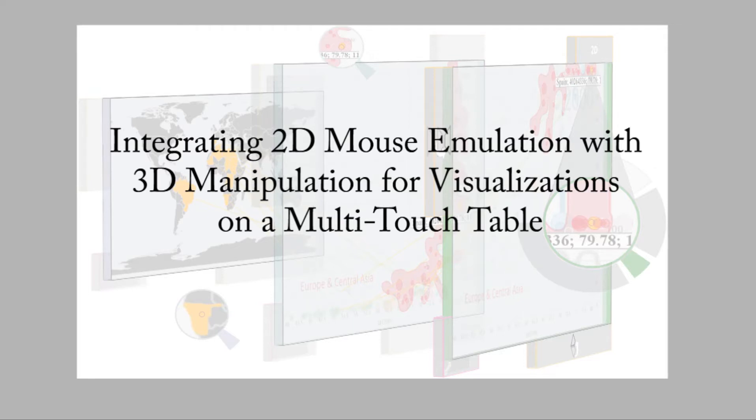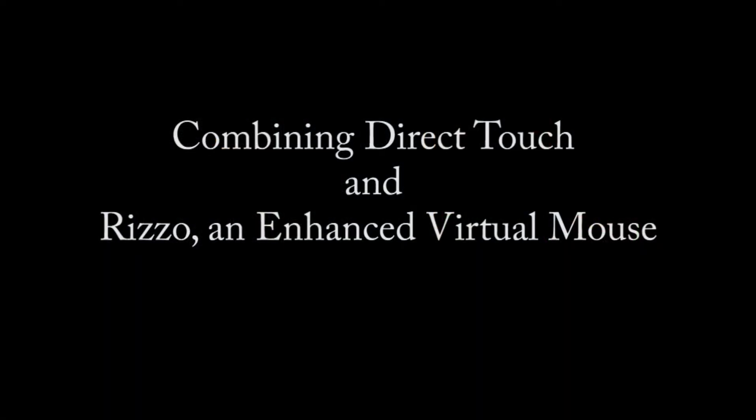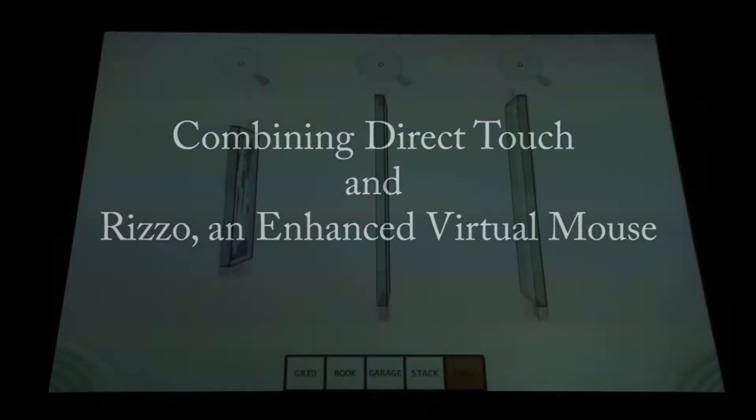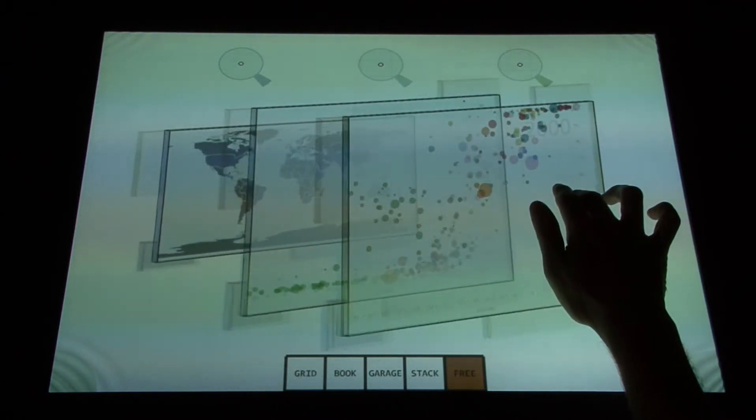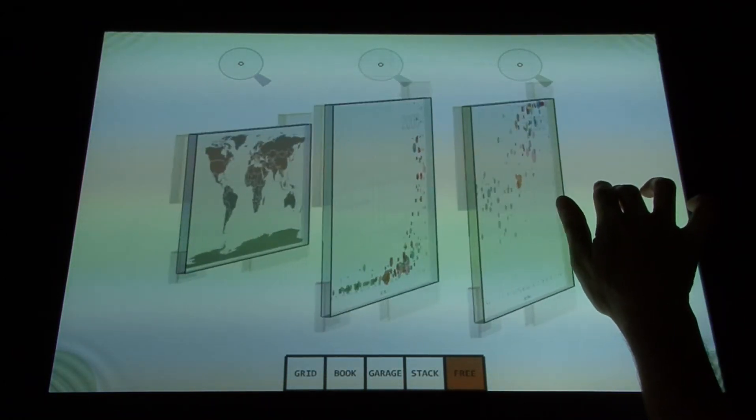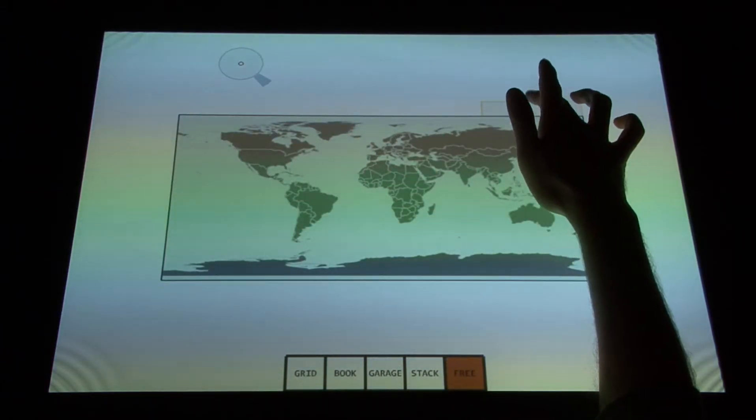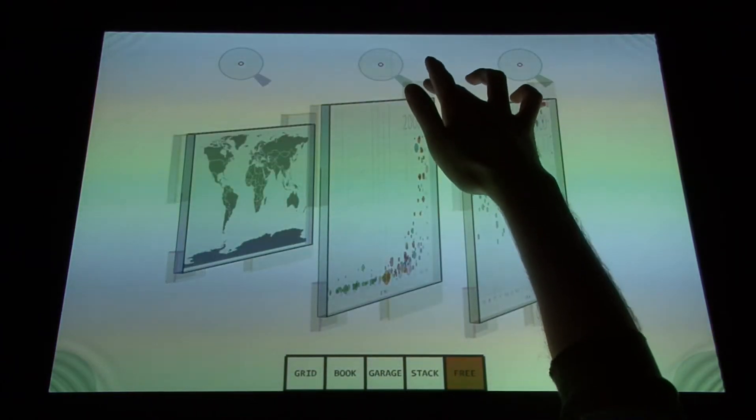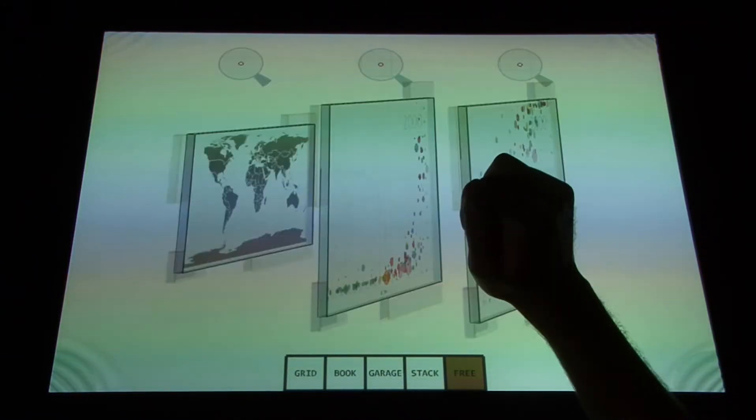Integrating 2D mass simulation with 3D manipulation for visualizations on a multi-touch table. We present an interaction design which addresses the challenge of providing unified multi-touch interaction in application environments which have both 2D and 3D components. We exemplify our design within the specific application area of collaborative information visualization on tabletop displays.